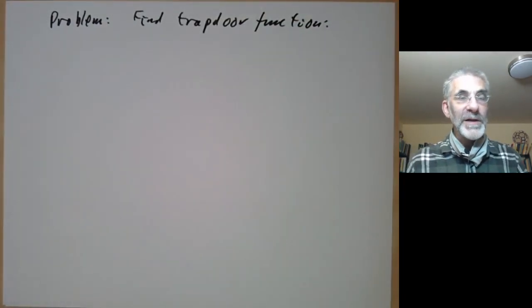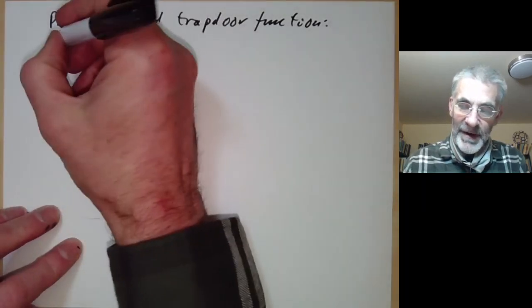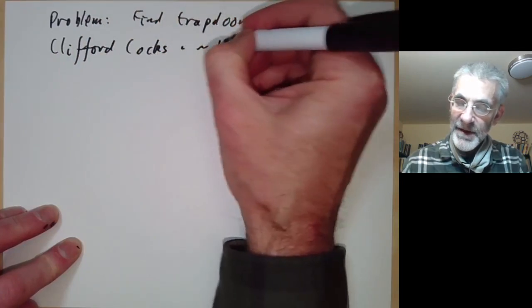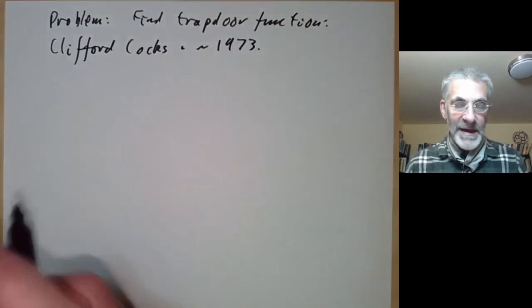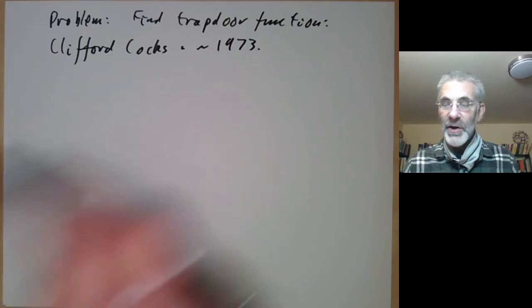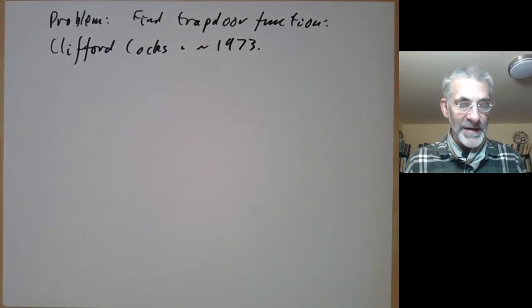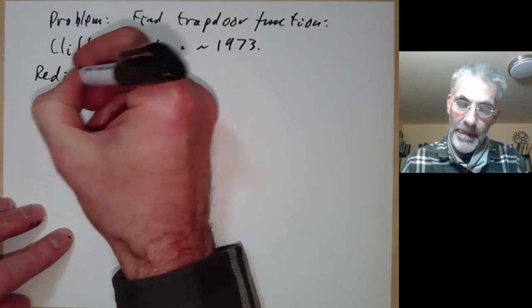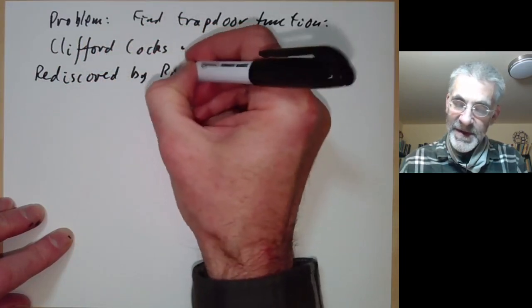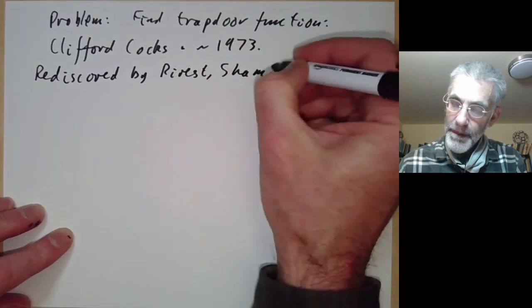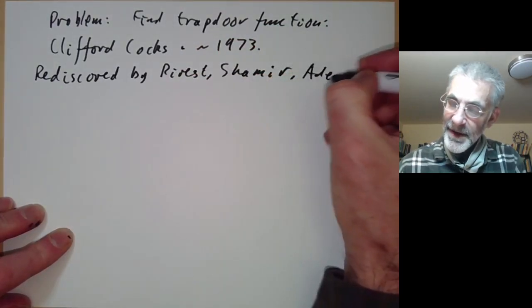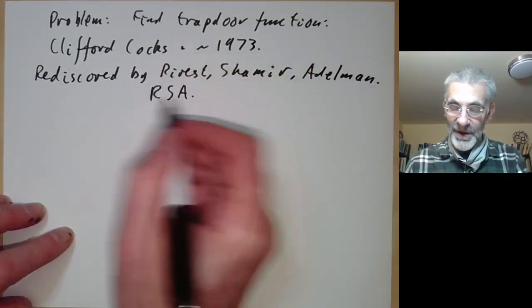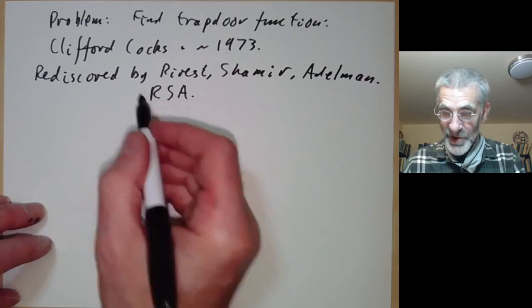The first example of a trapdoor function was found by Clifford Cocks in about 1973. For various technical reasons Clifford Cocks never published this and it wasn't really known that he had found this until about 20 or 30 years later. His trapdoor function was rediscovered by Rivest, Shamir, and Adleman a few years later.